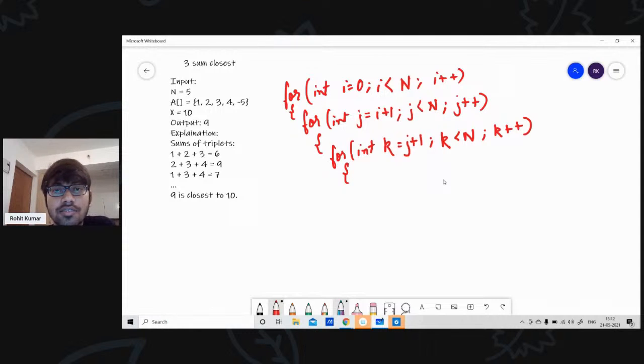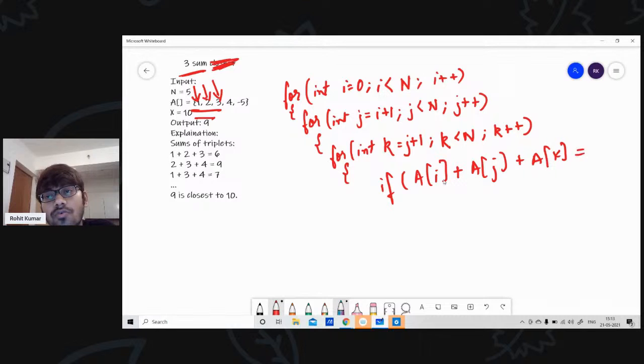i equals to zero, i less than n, j equals to i plus one. Basically, initially for i, it will be over here, for j the pointer will be over here and for k it will be over here. So we are checking the first triplet 1, 2, 3. So what I need to do? In general scenario, let's say this was not closest, I just need to find the triplet sum. I would have done something like: if A[i] plus A[j] plus A[k] equal equals to my x or not. I would have straight away checked for equality. But right now I don't want to check for equality. Like equality is there, that's great. I want to see, even if equality is not there, I want to go to the closest.